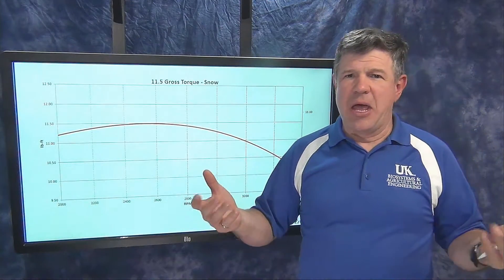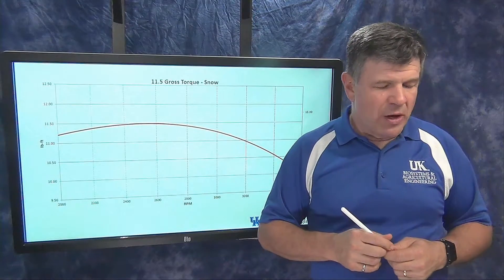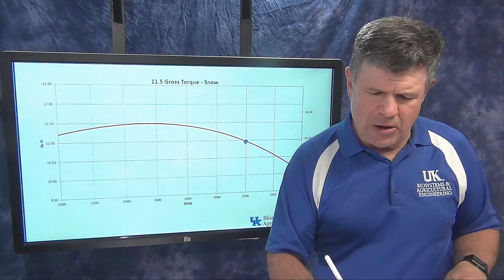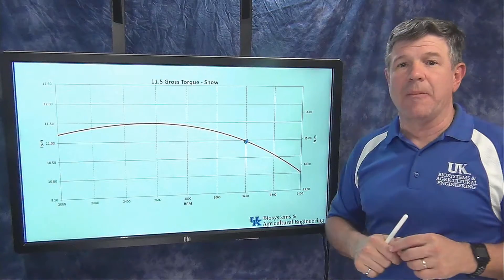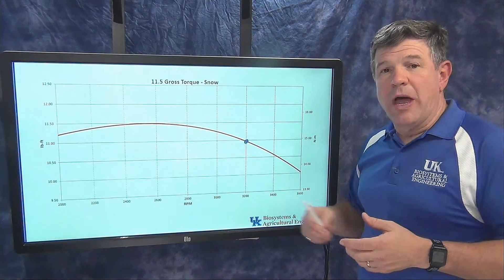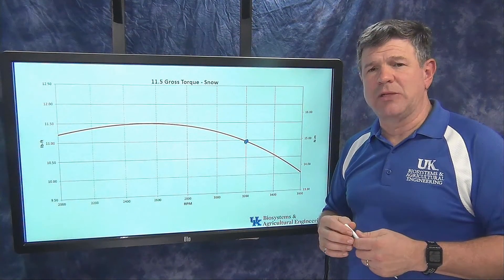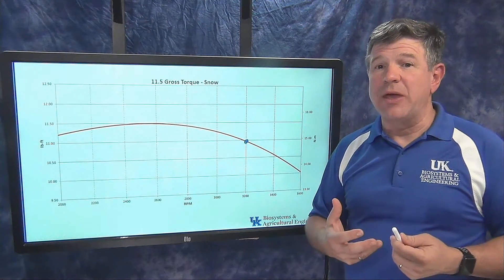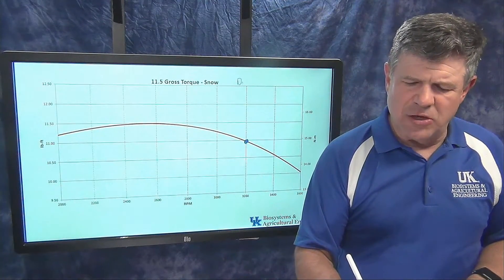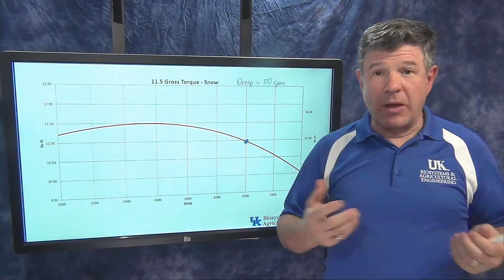If I have an application — let's say I'm building a log splitter that has to drive a hydraulic pump, and that hydraulic pump wants to run at 3,200 RPM — the pump is going to operate at that point at 3,200 RPM, where it's at maximum power. That's where I want my engine to be at maximum power when it's loaded down, when it's working hard, when I'm splitting a piece of wood. So I need to know the droop for that engine. Let's say the specifications state the droop is 50 RPM.